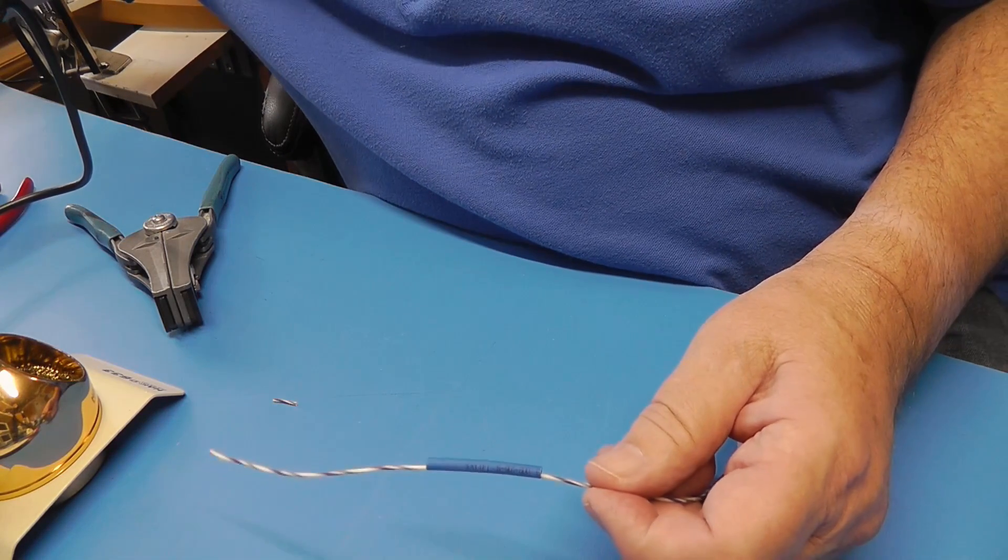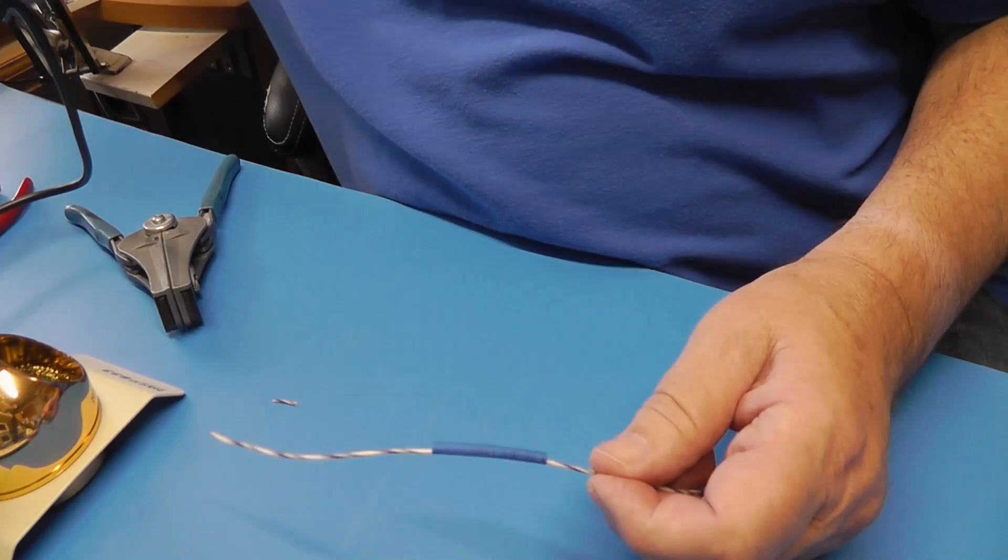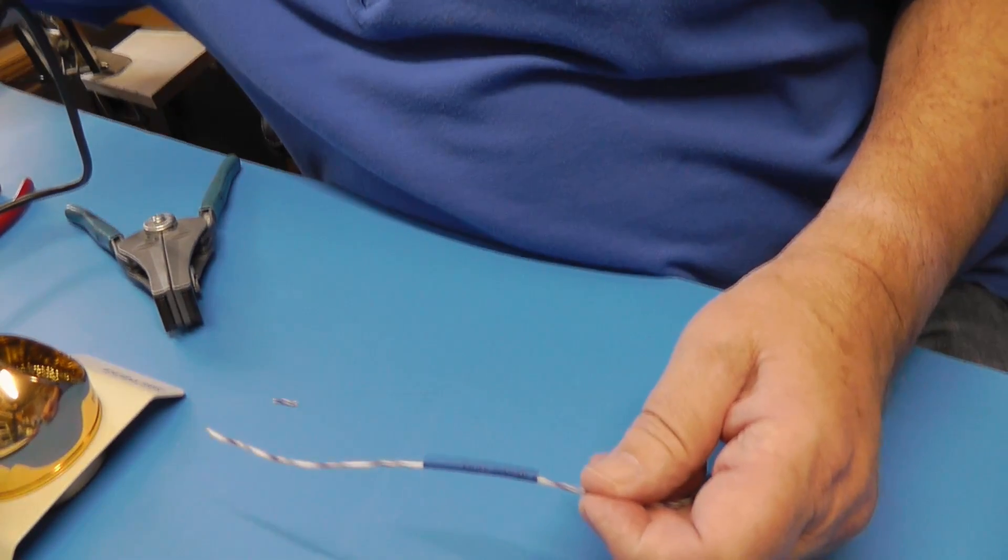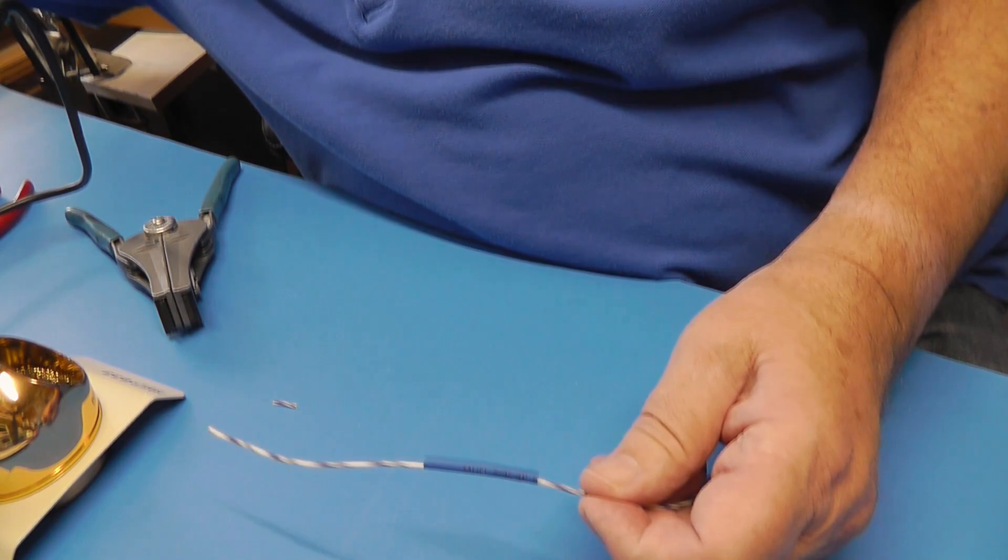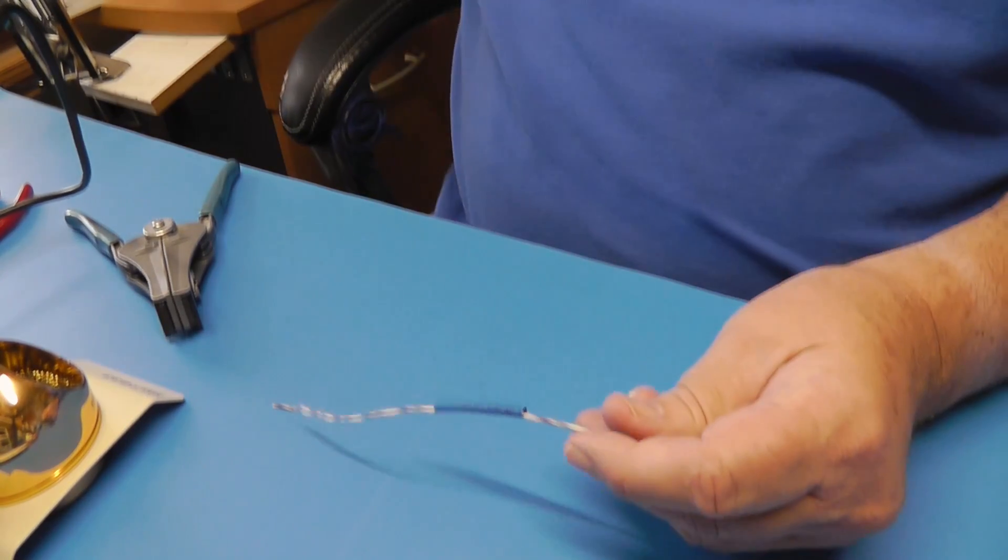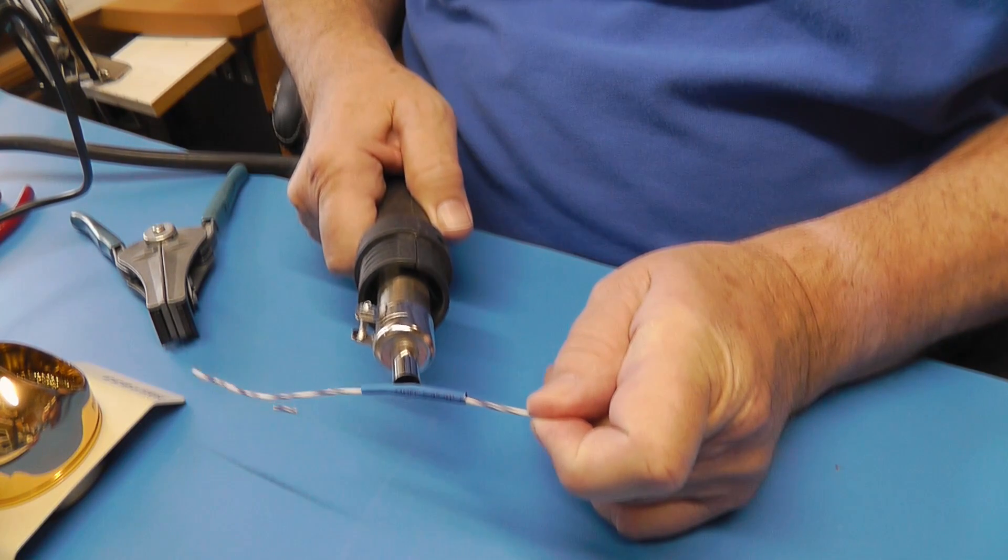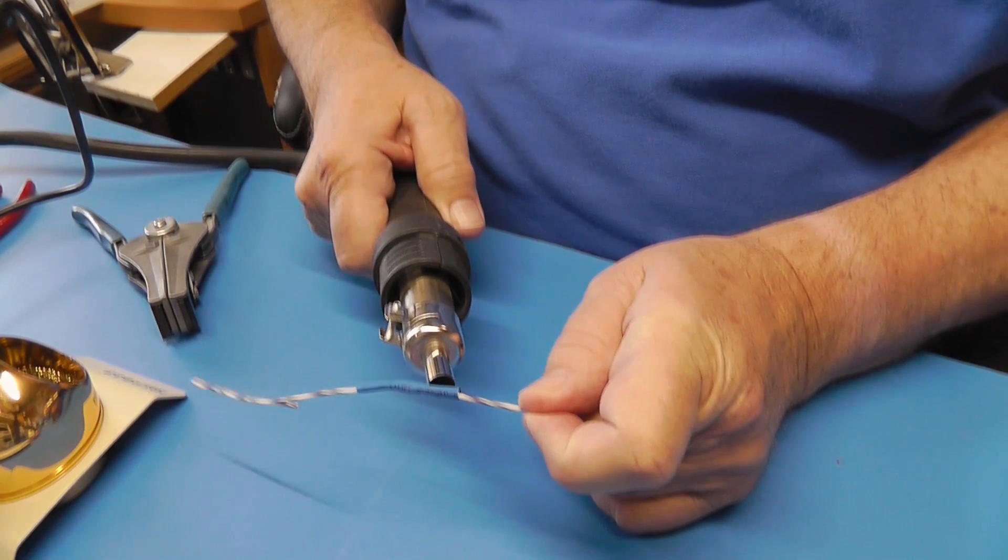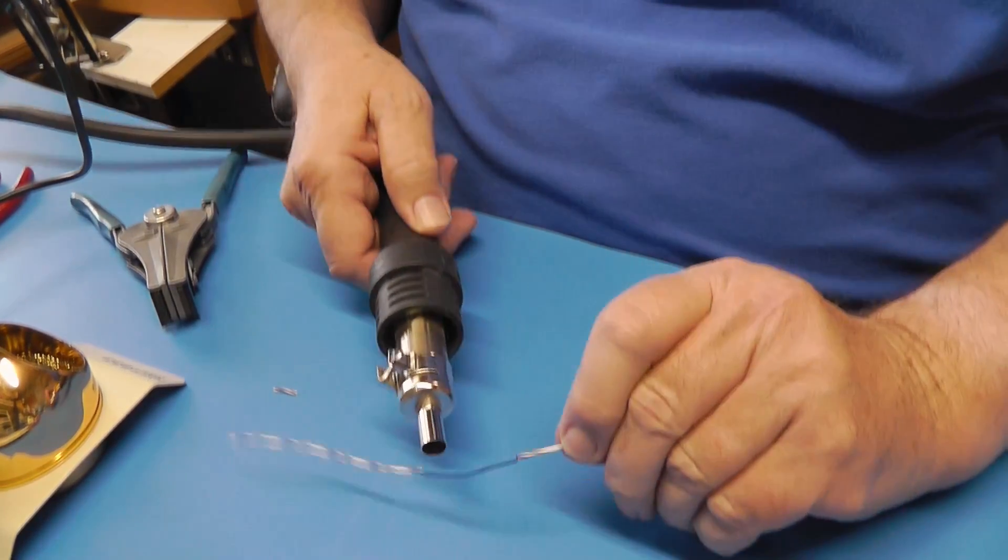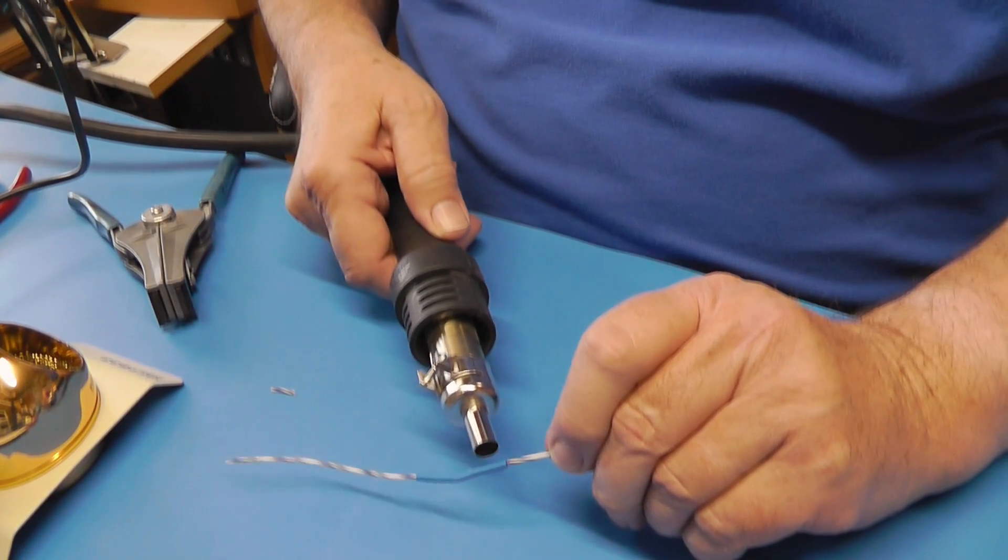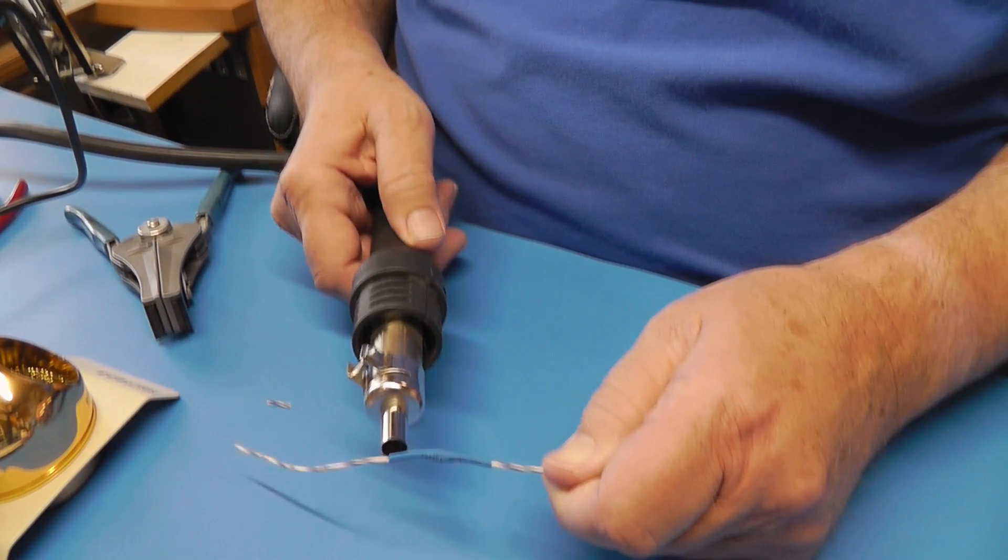Now what I'm going to do is turn on the hot air. And I don't need it too terribly hot. Okay. We're going to blow hot air on it. And that is very hot air. That's the thing about these rework machines. You can actually get the air out of it so hot it'll start a fire. So you need to be real careful with these.